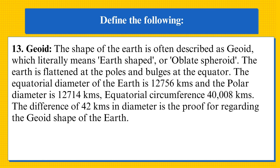Geoid: the shape of the earth is often described as geoid, which literally means earth-shaped, or oblate spheroid. The earth is flattened at the poles and bulges at the equator. The equatorial diameter of the earth is 12,756 kilometers and the polar diameter is 12,714 kilometers. The equatorial circumference is 40,008 kilometers. The difference of 42 kilometers in the diameter is proof for the geoid shape of the earth.